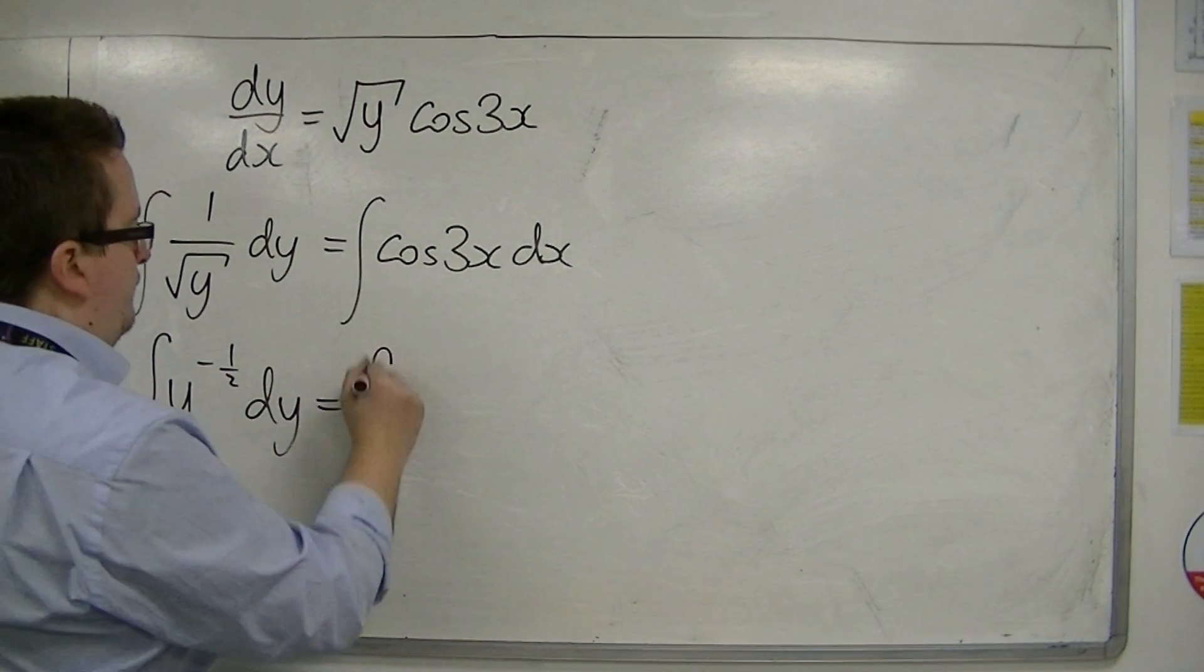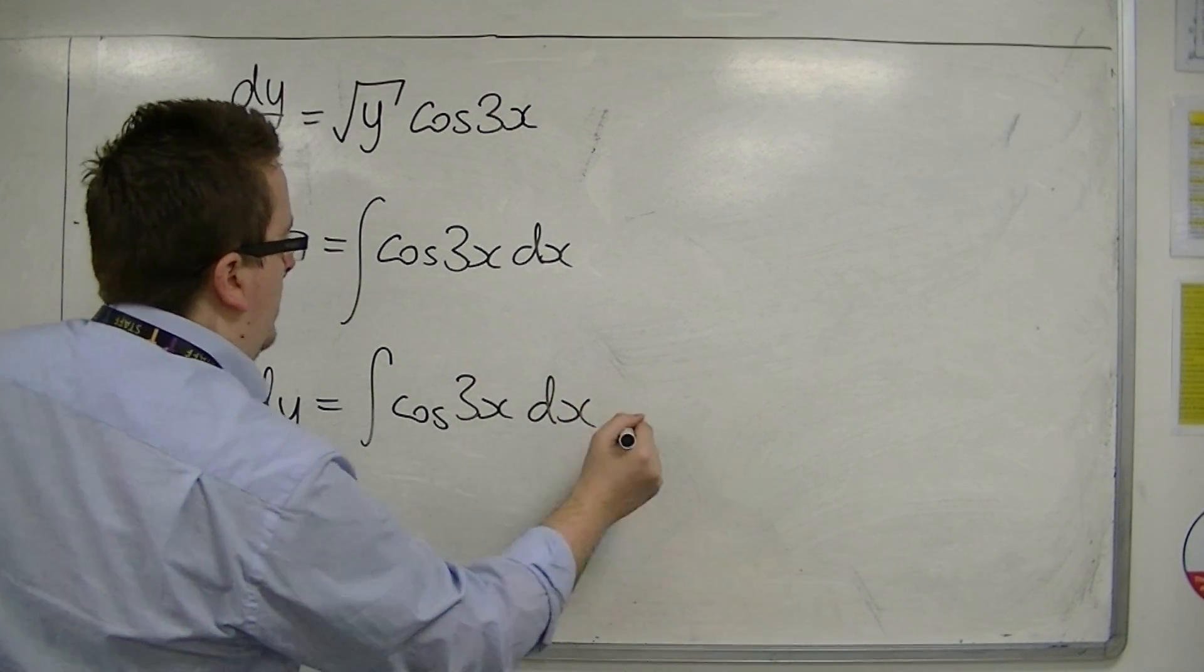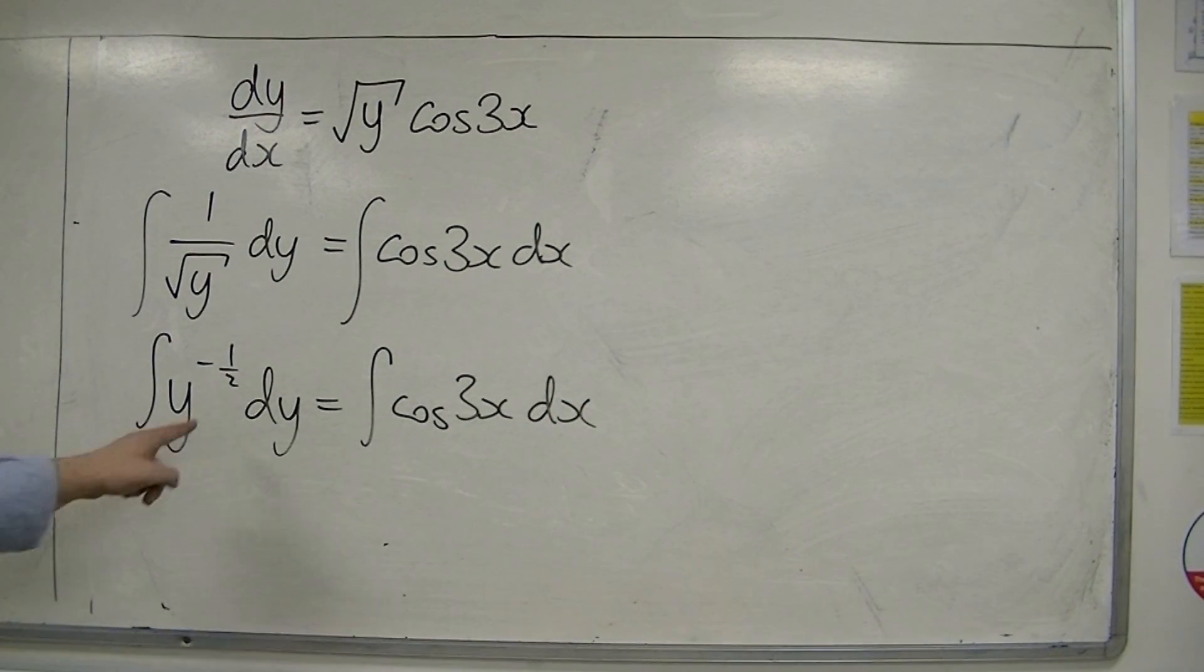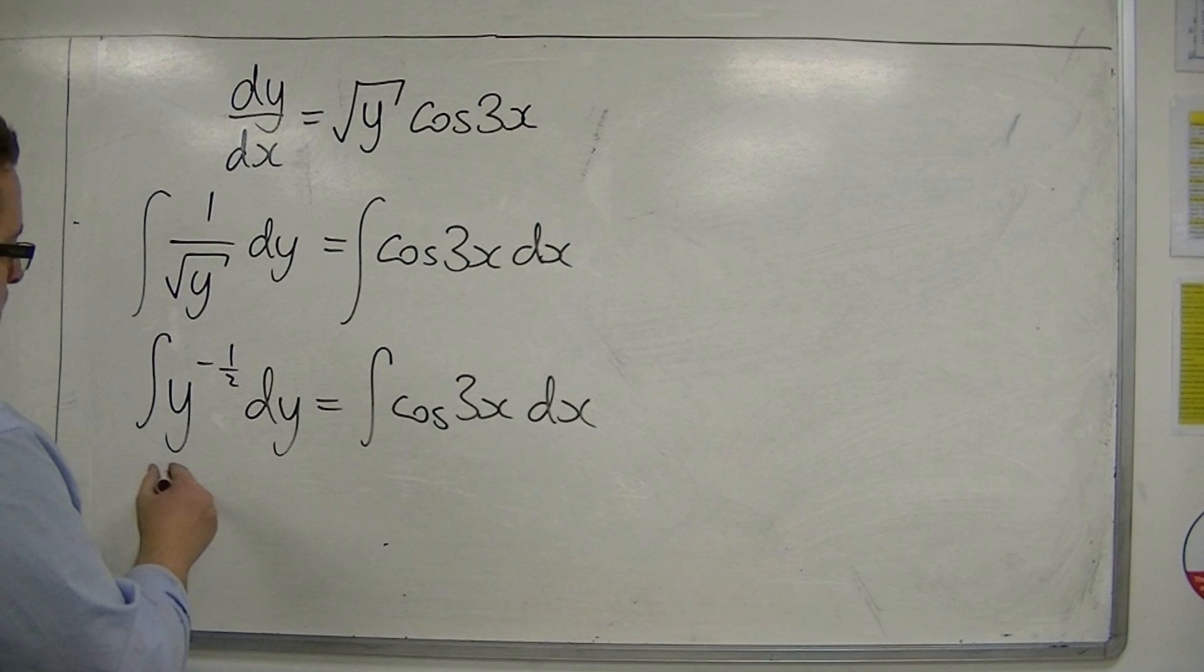Integrated. OK, now I'm happy to integrate. So add 1 to the power, divide by the new power - that goes up to y to the half. Divide by half is multiplying by 2.